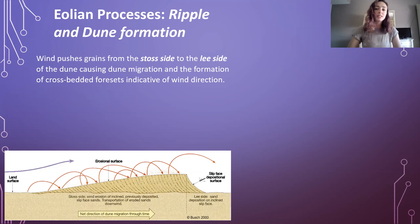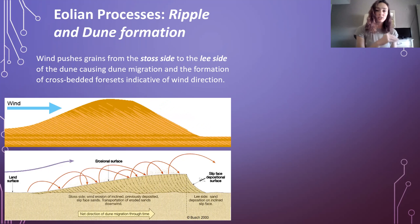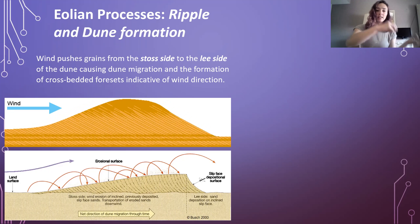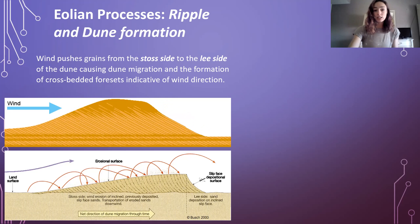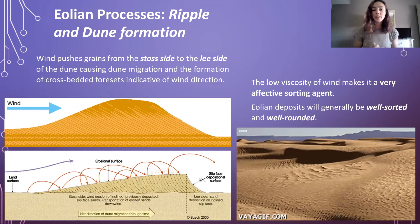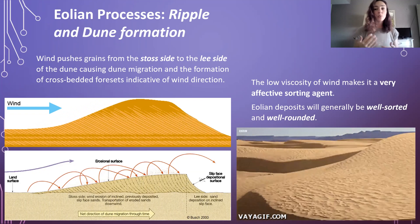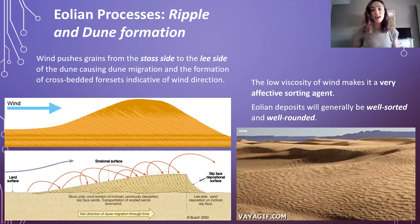What happens in aeolian environments is wind pushes grains from the stoss side to the lee side of a dune, causing dune migration and the formation of cross-bedded foresets indicative of wind direction. This is shown in this animation, where wind is pushing the dune forward as it transports grains from the stoss side — that long side on the back — and pushes them to the lee side, causing migration. We can tell the direction of wind due to dune preservation. Wind is also a very effective sorting agent, creating really well-rounded and well-sorted grains, so aeolian deposits are generally well-sorted and well-rounded.